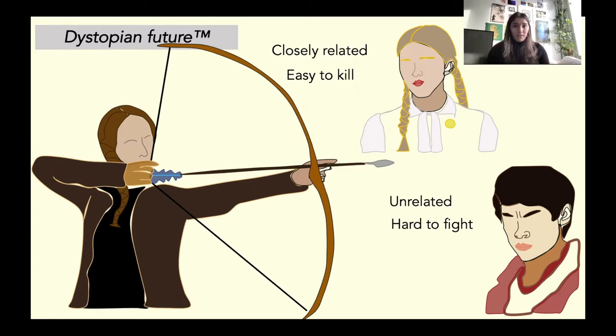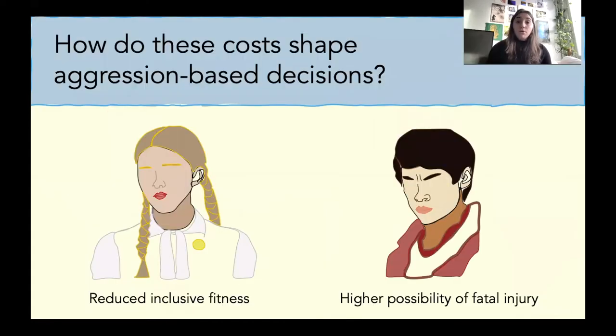There are obvious, but also not so obvious, costs associated with either decision. More directly, how are these costs shaping your aggression-based decision? Because if you attack your sister, you risk the potential of reducing your inclusive fitness. If you attack this big, burly, unrelated guy, you have a high possibility of risking fatal injury.